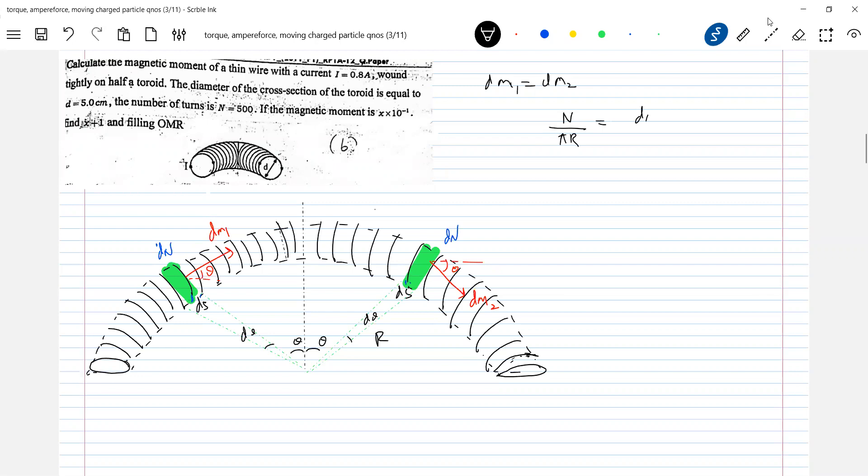This should be equal to element dN by dS. Number of turns per unit length I'm defining. So what is the dS value? dS should be equal to r d theta. N over pi r equals dN over r d theta. So what is the value of dN? You can write N over pi d theta.